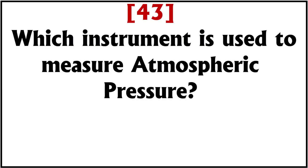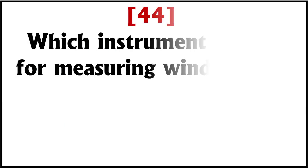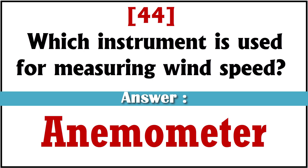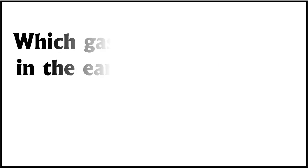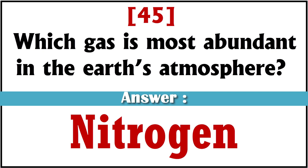Which instrument is used to measure atmospheric pressure? Barometer. Which instrument is used to measure wind speed? Anemometer. Which gas is most abundant in the earth's atmosphere? Nitrogen.